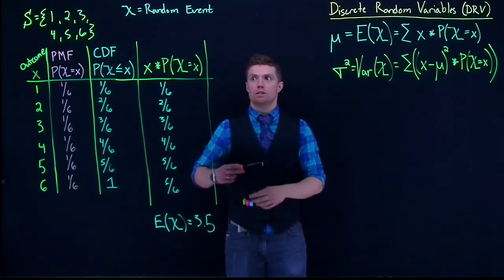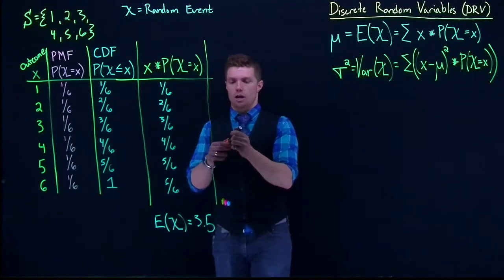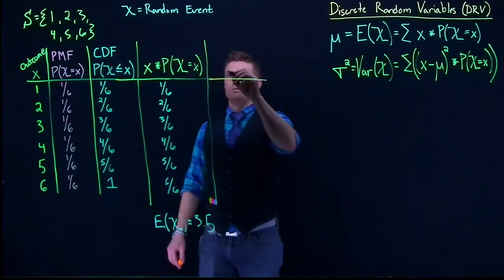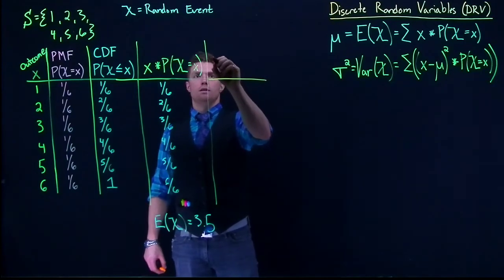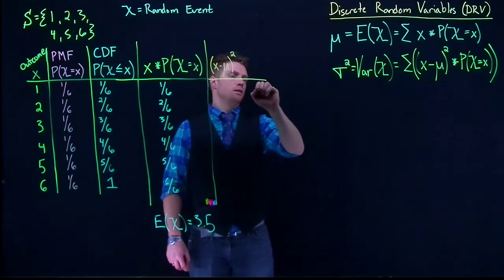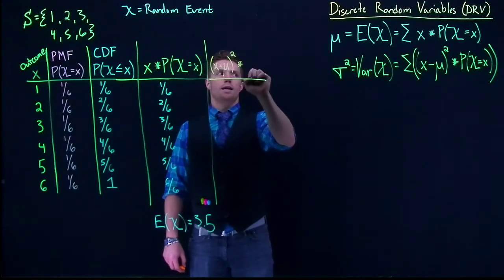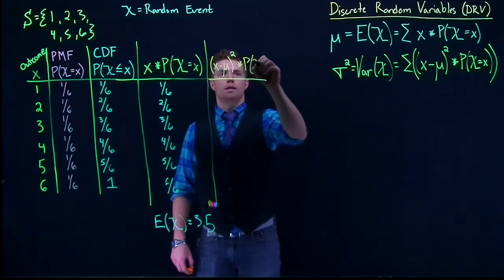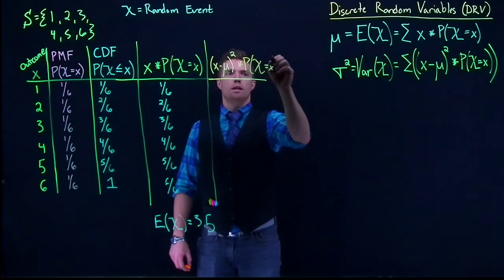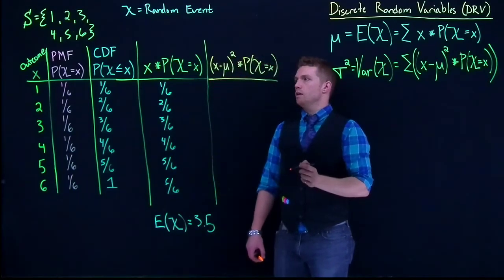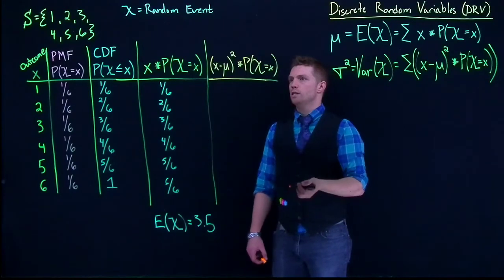Okay, so we just need another column then on our table. So let's just build another column. So this is going to be x minus mu squared multiplied by its associated probability of success. So we'll do probability of little x.